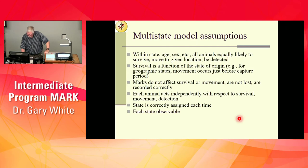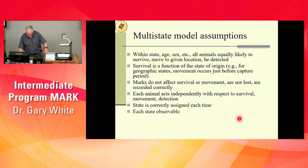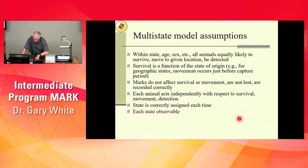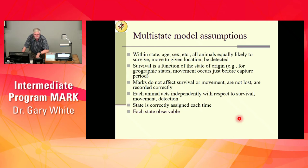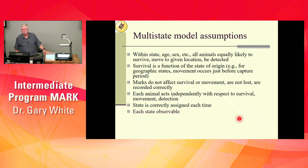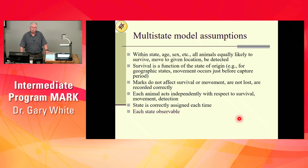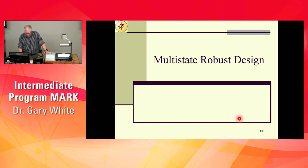Multi-state model assumptions: within state, age, and sex, all animals are equally likely to survive — no parameter heterogeneity. Survival is a function of the state of origin; capture probability depends on the state where they end up. Marks don't affect survival or movement, animals act independently, state is correctly assigned each time, and each state is observable. We're going to violate that last assumption when we move to the multi-state robust design.